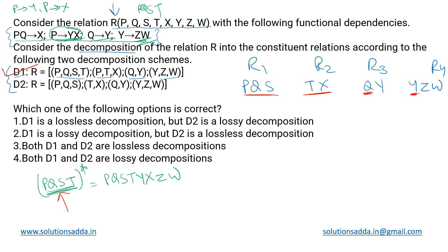Attempting to merge: R1 and R2 have no common attribute. Checking R1 and R3, the common attribute is Q, which forms the candidate key in R3. So R1 and R3 can be merged to give a new relation R5 with attributes P, Q, S, and Y.